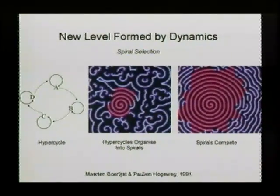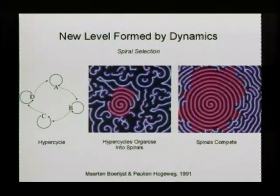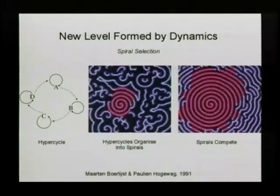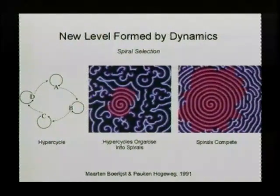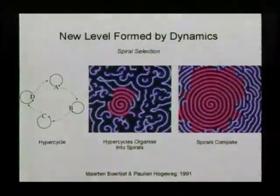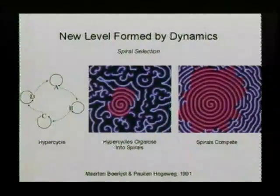And it then turns out that these spirals, they sort of become dependent on the spirals instead of their own replication speed. Because you get selection between spirals. These spirals, they start to compete for space. Space is only limited. And who has the biggest spiral becomes the selection criterion basically. And of course this still depends on properties of these molecules. But the spirals have formed a new type of organization and selection.